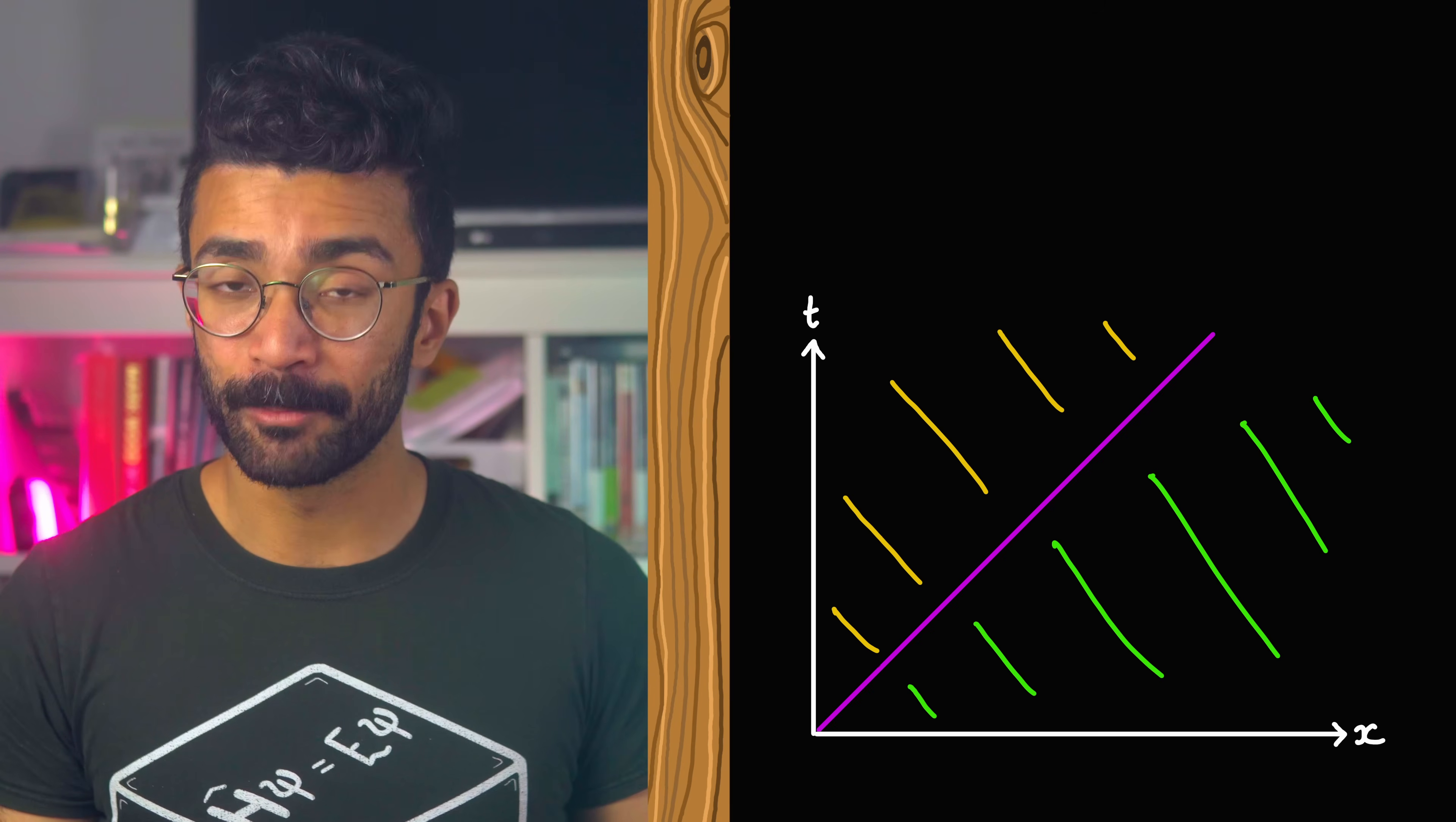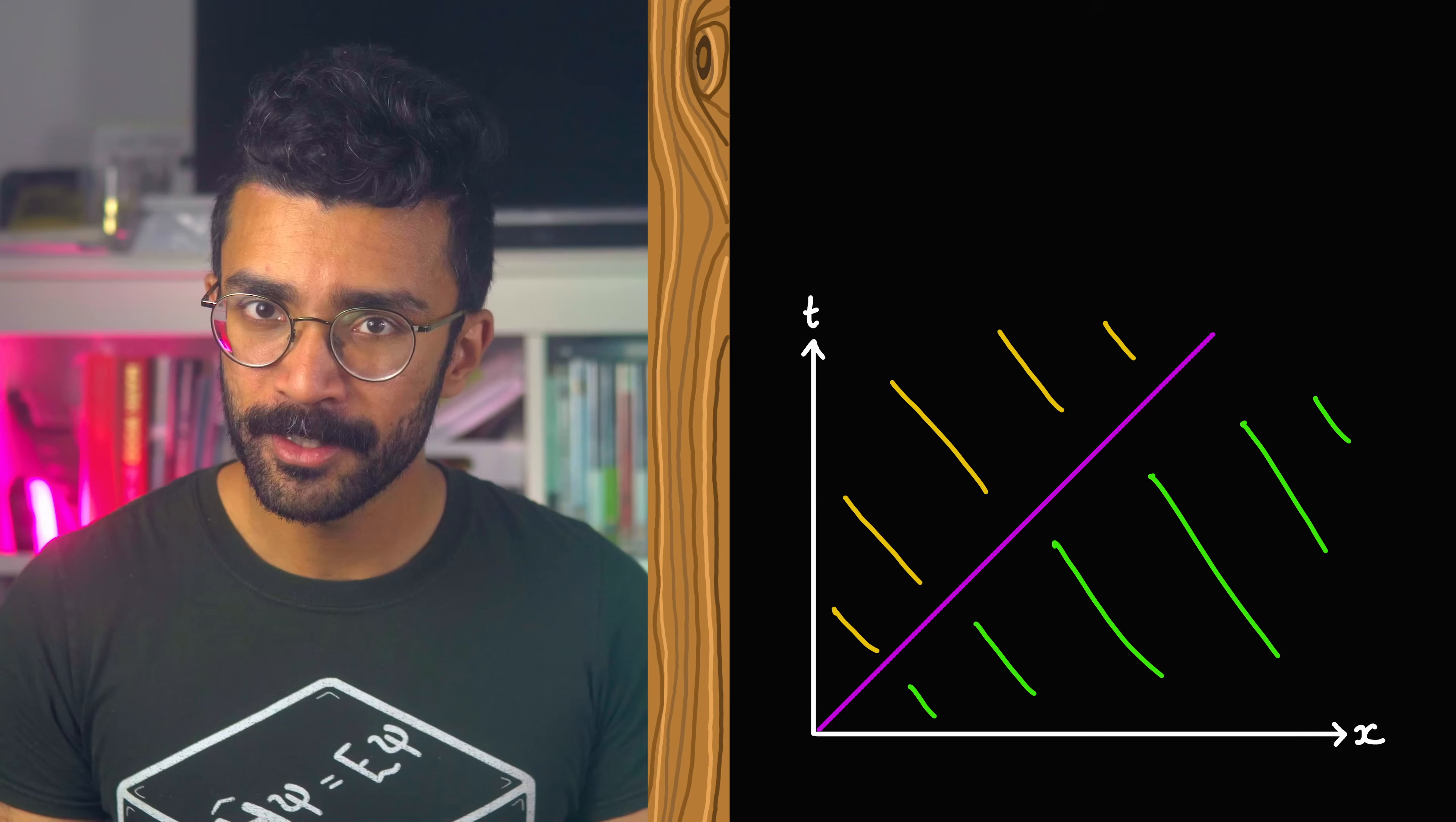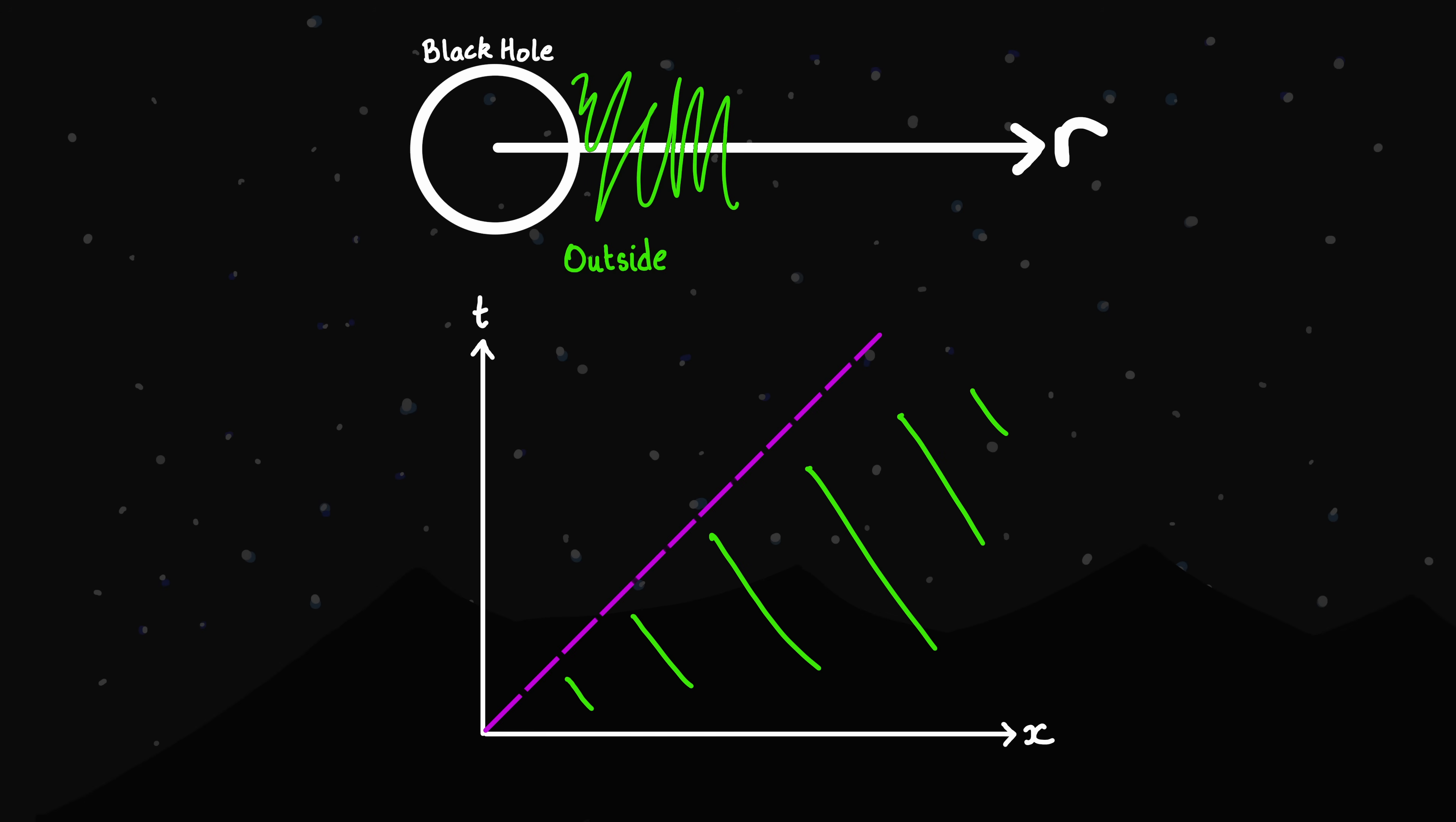Now interestingly, this simple diagram can be used in a rather abstract way to understand what happens outside, around, and inside a black hole. Specifically, it turns out that we can treat this region of our graph as representing everything outside the event horizon of the black hole. This 45 degree dotted line represents the event horizon itself, which is the boundary beyond which not even light can escape the black hole. And this part here represents the inside of the black hole beyond the event horizon.